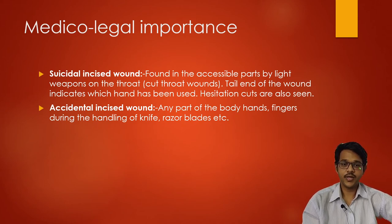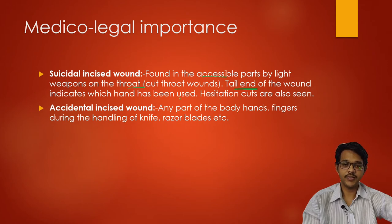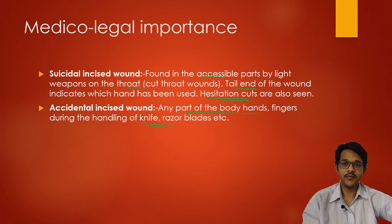Suicidal incised wounds are found in accessible parts of the body, mainly the throat or hands. The tailing of the wound will tell whether the person was right-handed or left-handed. Accidental incised wounds can be seen in any part of the body — mainly the hands and fingers — due to mishandling of knives or razor blades.